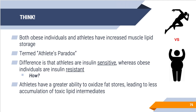The last concept is the athlete's paradox: both obese individuals and athletes have increased muscle lipid stores, yet they are very different phenotypes with very different responses. Athletes are insulin sensitive while obese individuals are insulin resistant. Athletes have a greater ability to oxidize those increased lipid stores, decreasing accumulation of toxic lipid intermediates. Obese individuals have increased free fatty acid levels and increased fat uptake but lack the capacity for increased fat oxidation, leading to accumulation of toxic lipid intermediates that contribute to obesity-induced insulin resistance.